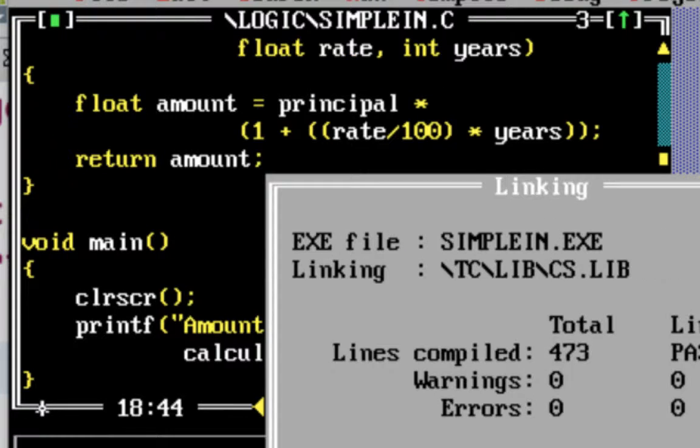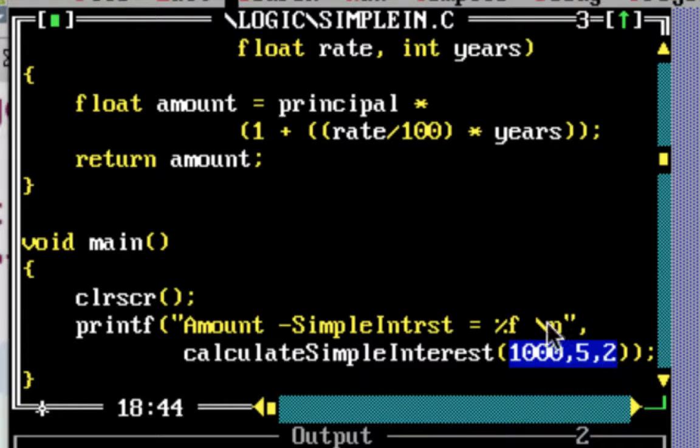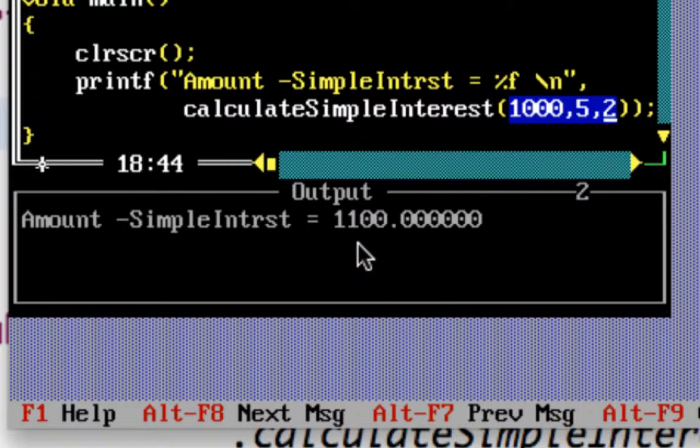So if I run the program, you would see that the output which is presented is amount simple interest is 1100.